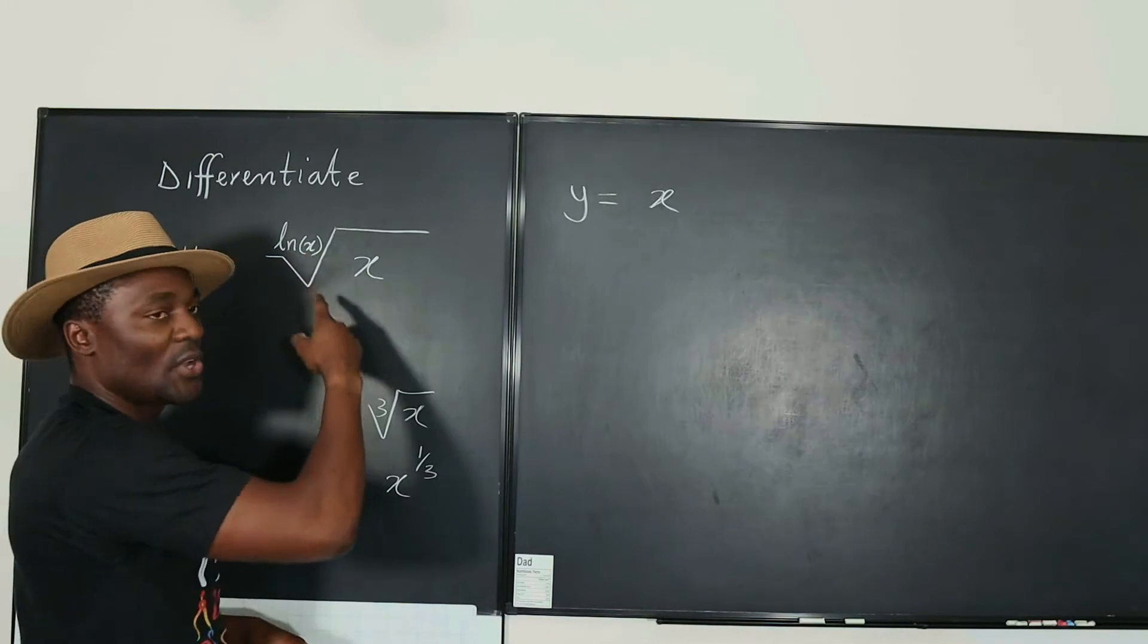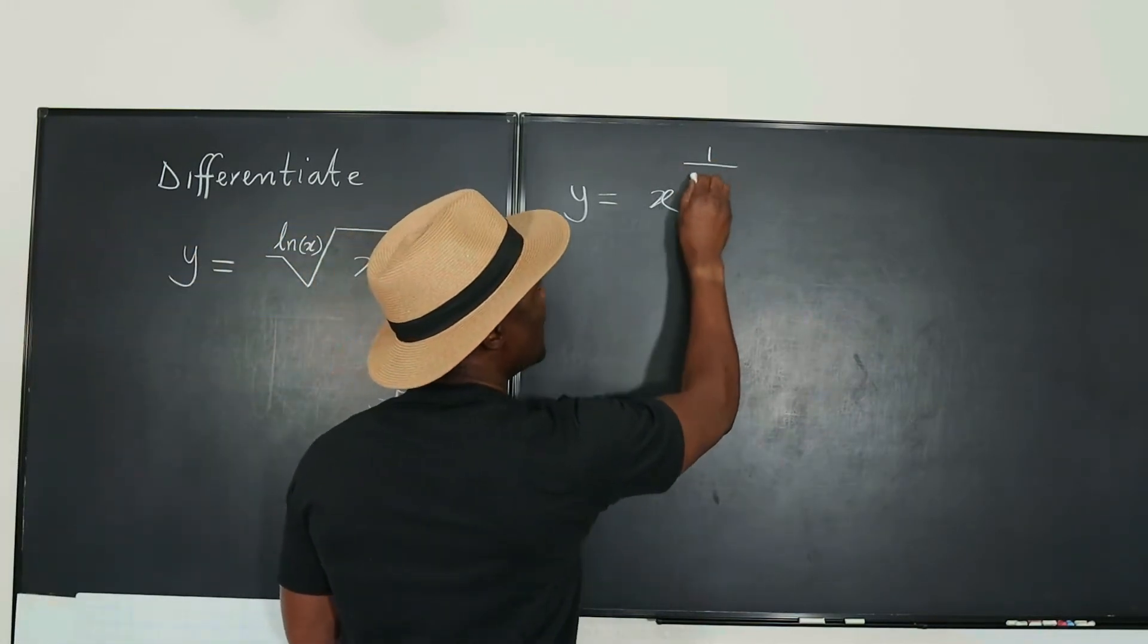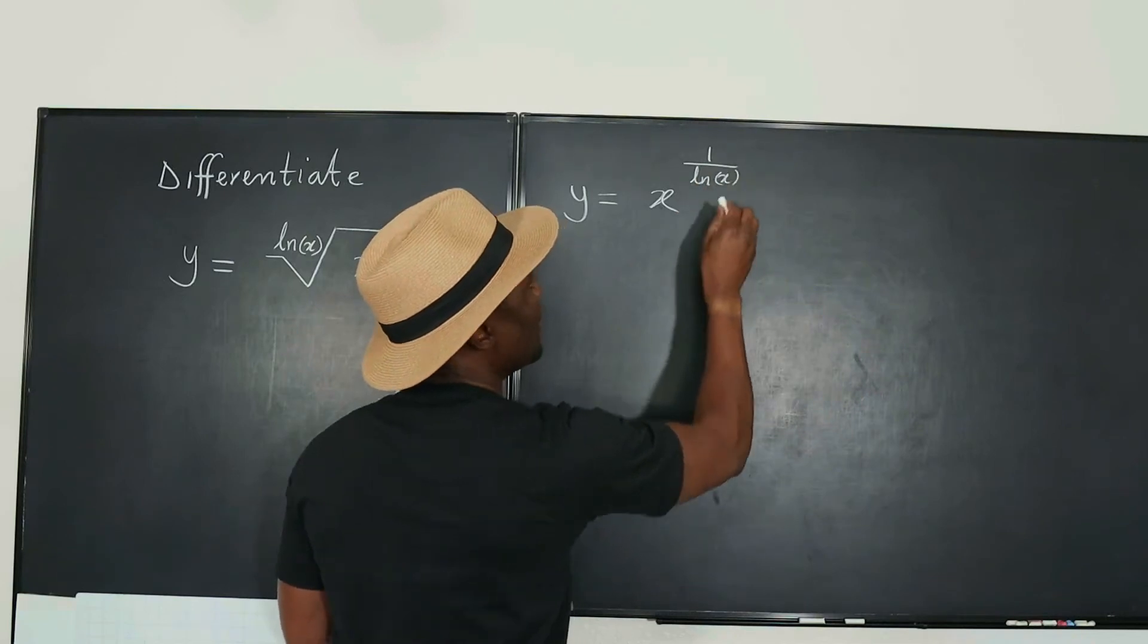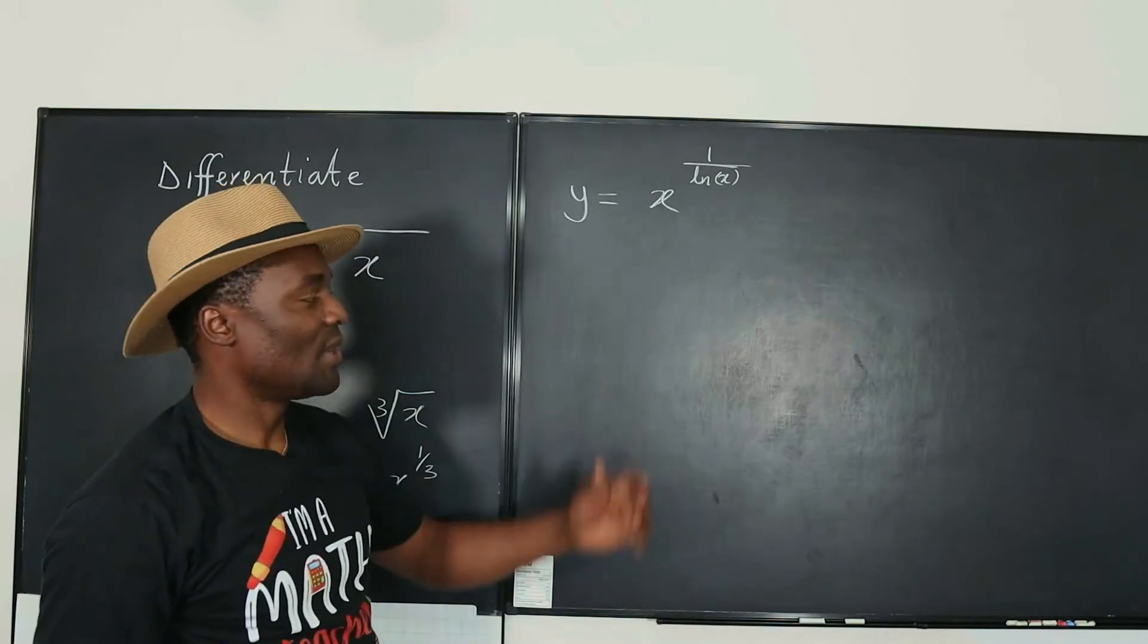So now that it is the natural log of x root of x, I'm going to write it as x to the 1 over the natural log of x. So I have rewritten the problem and now it looks like this.